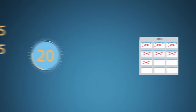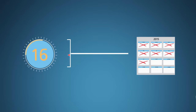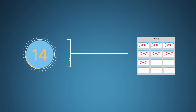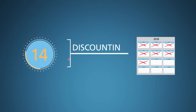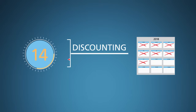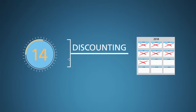Usually, we adjust DALY estimates for timing, meaning we treat future events as having less value from today's perspective because we aren't as concerned with the future as we are with the present. This adjustment is known as discounting. Keep it in mind because it can significantly reduce the DALY burden of early mortality. For now, we'll stick to exploring undiscounted DALYs.